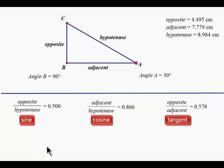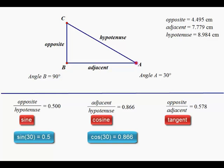The equation could be written as sine of 30 degrees equals 0.5. All of these proportions are stored in your calculator. Type in sine of 30, you get 0.5. Similarly, cosine of 30 should be 0.866, tangent of 30 should be 0.578, and so on.